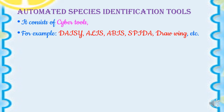The next tool is the Automated Species Identification Tool, also called the cyber tool. It consists of cyber tools such as DAISY, ALIS, ABIS, SPIDA, and DRAWWING.